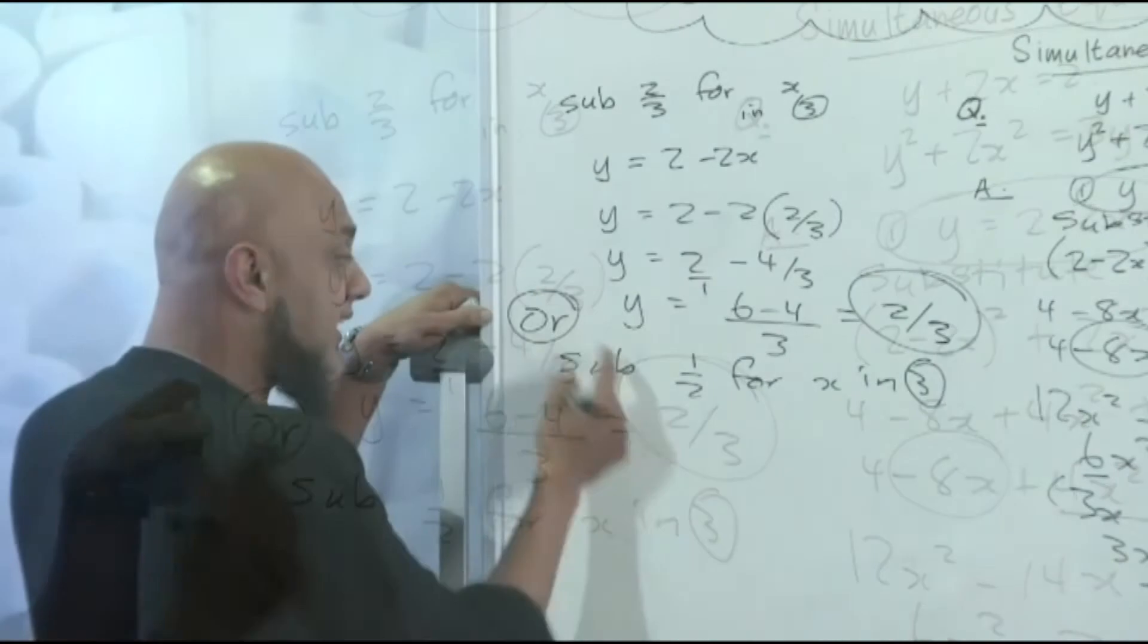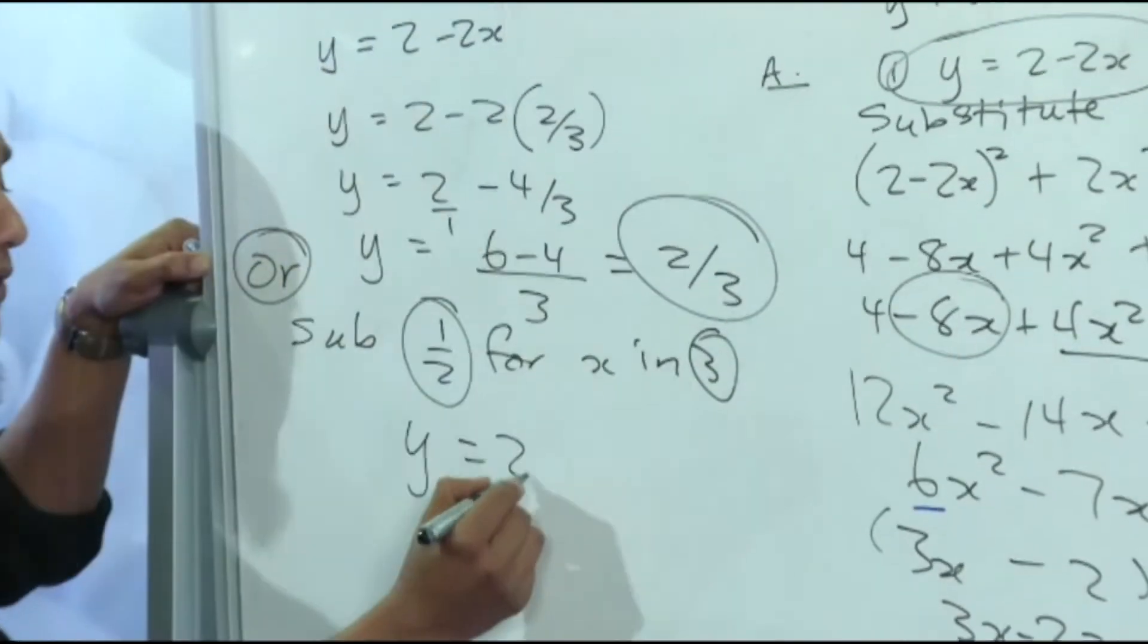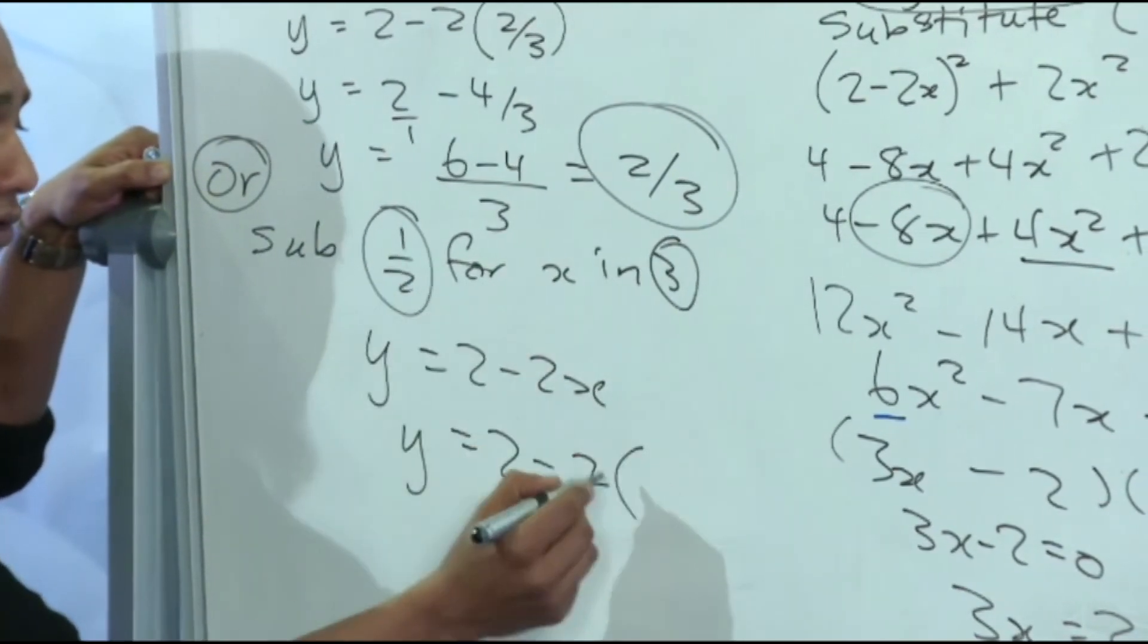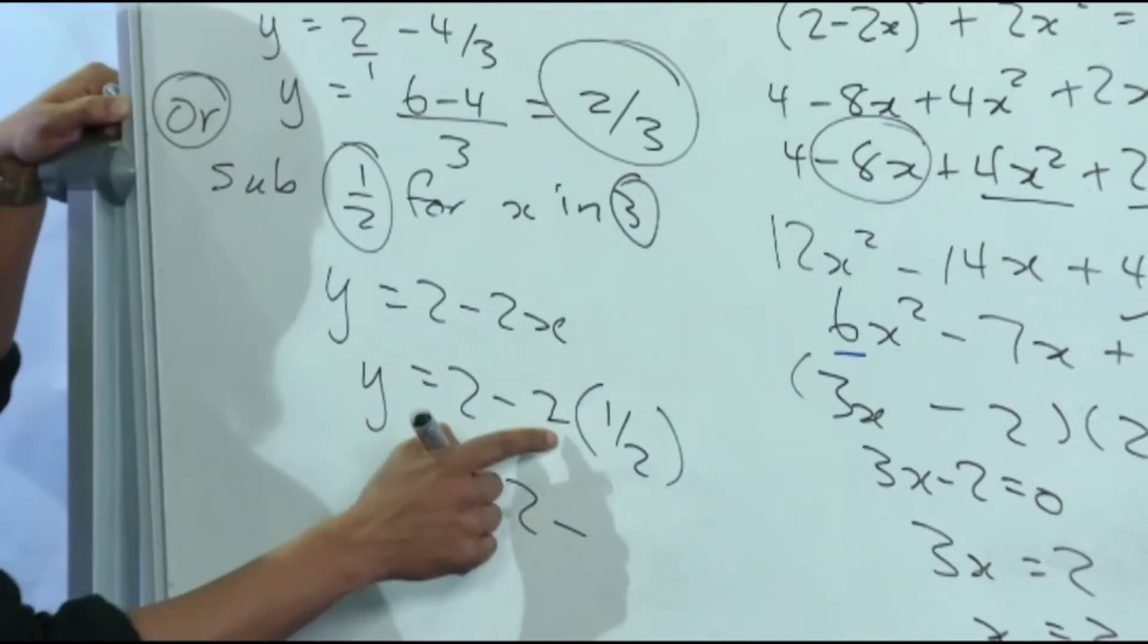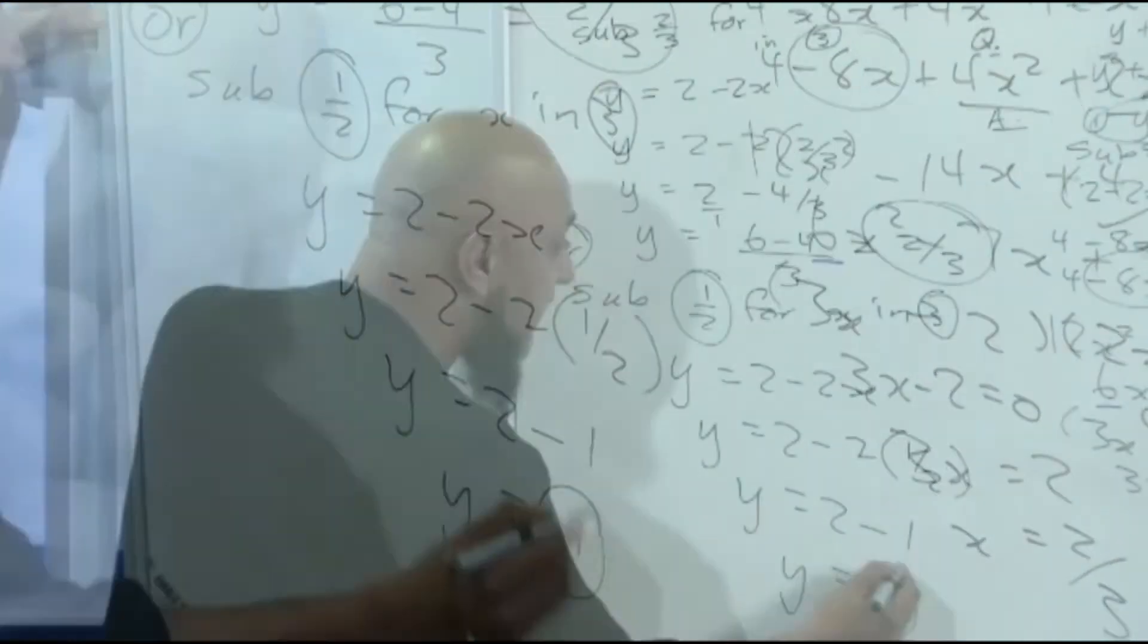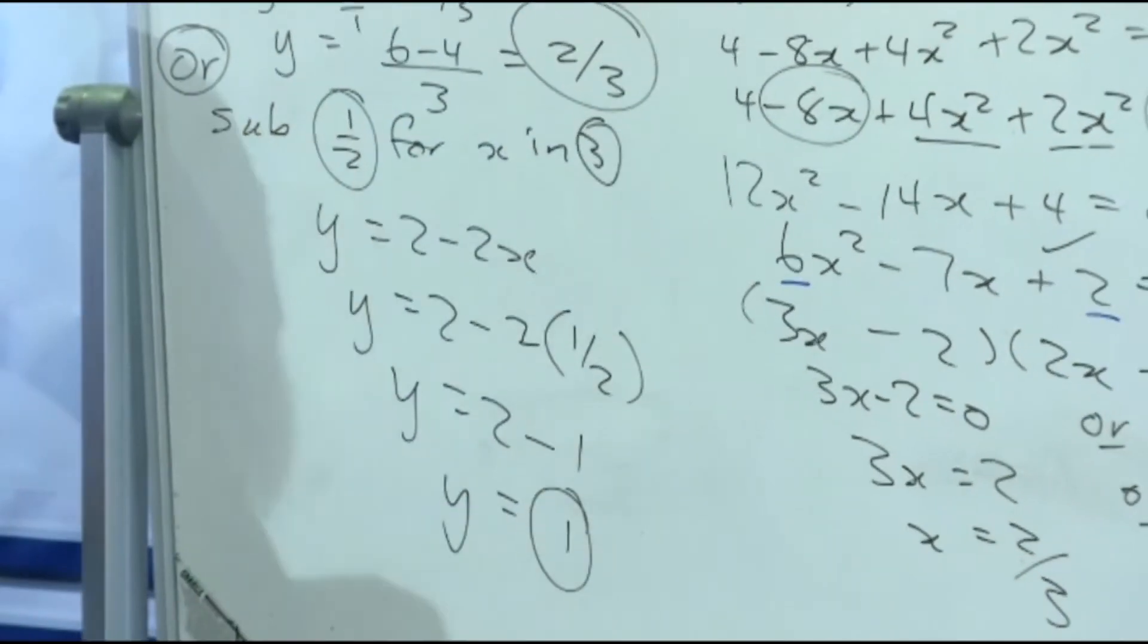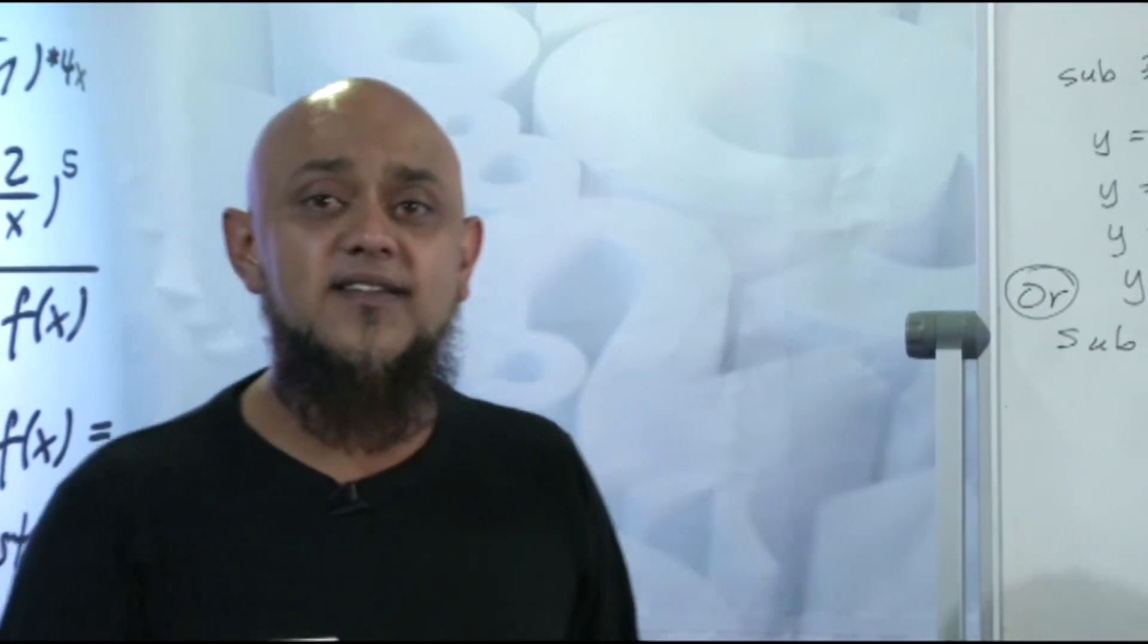Or your second solution. Substitute half for x in equation number 3. So you've got y is equal to 2 minus 2x. Y is equal to 2 minus 2 into a half. Y is equal to 2 minus 1 is 1. So there we go boys and girls. You've got your 2 y solutions. You've got your 2 x solutions. And this now wraps up our topic on simultaneous equations.